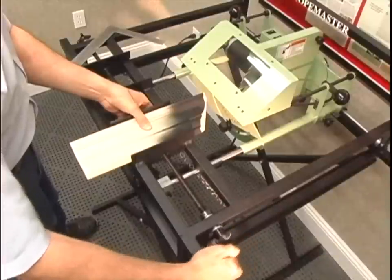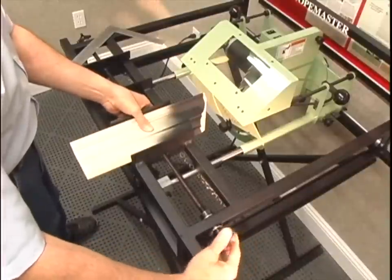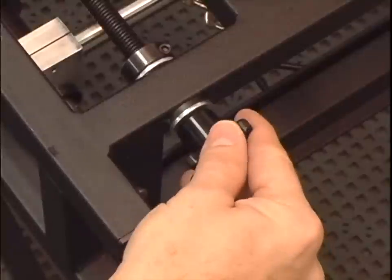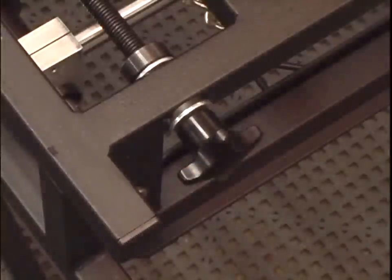Pull up on the movable vise jaw and push down on the workpiece as you tighten the vise. Once the jaws make contact, tighten just a quarter turn more.